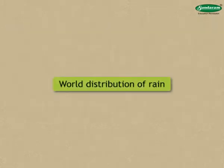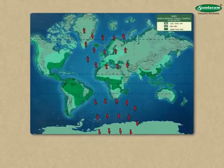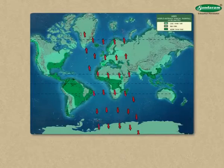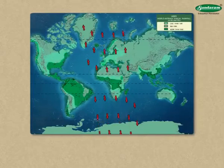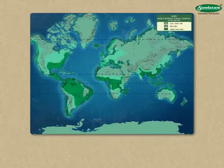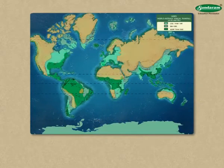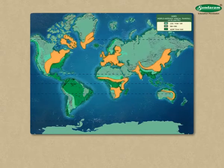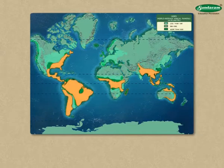Now let us gather information about world distribution of rain. The distribution of rain on the earth is found to be uneven. Generally, the rainfall reduces as we go from the equator to the poles. The distribution of rainfall in the world is shown on a map with the help of isohydes.